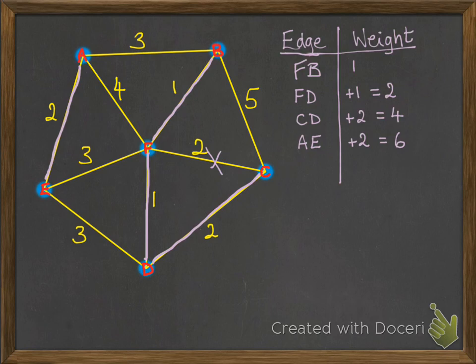Next from there, we're looking for a 3, and we've got three 3s on there. It doesn't matter which one we pick. In fact, any of those that we pick would finish off our tree. I'm just going to go for E to F, and that adds in a 3 and gives us a total of 9.